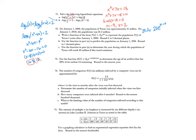Divide both sides by 21 to get 1.2 equals e^(10k). Take the natural log of both sides and divide by 10: k equals ln(1.2) divided by 10. That gives k approximately equal to 0.01823.